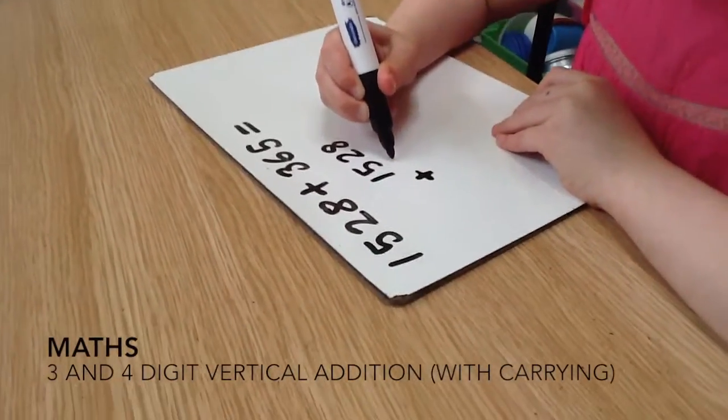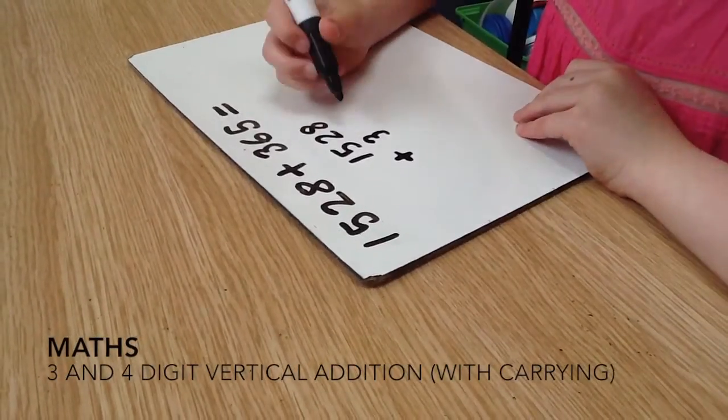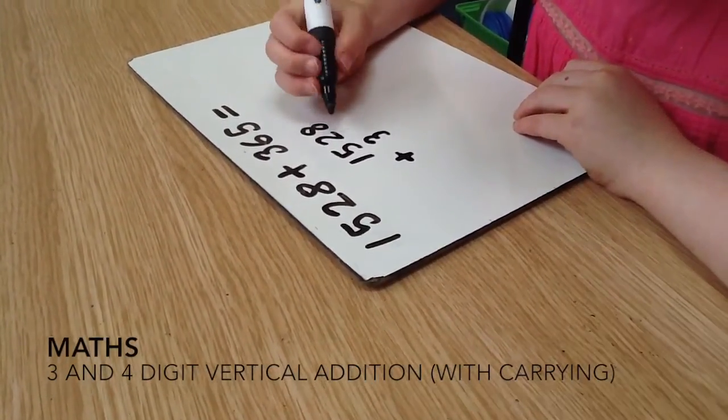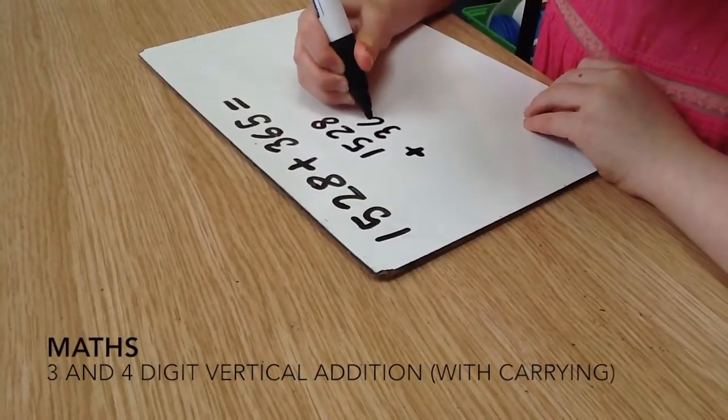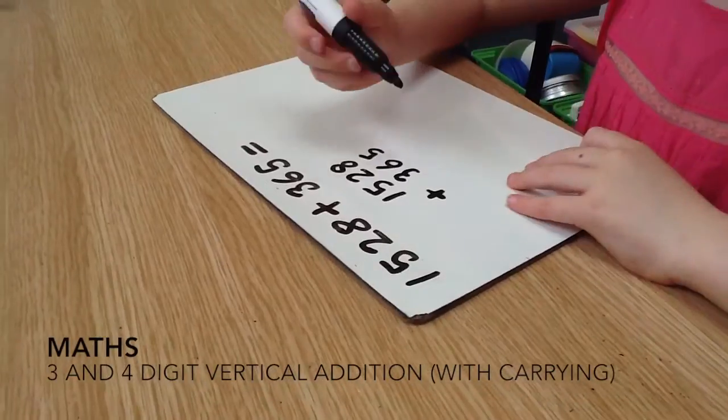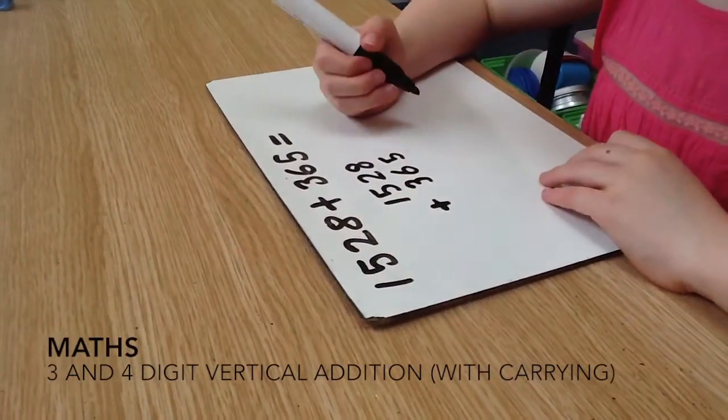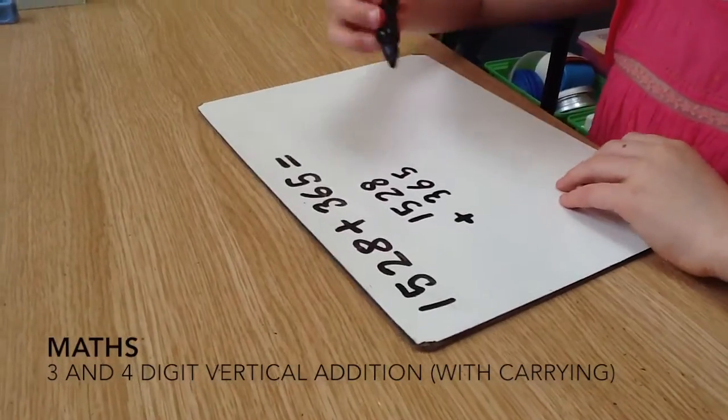Put the three under the five because it's the hundred. Then you put the six under the two because it's the tens. Then you put the five under the eight because it's the units. You don't have to put anything under the thousand because there aren't any more thousands to add on.